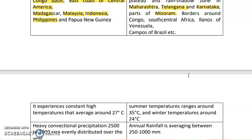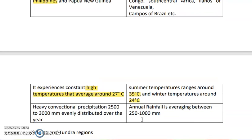The temperature in the rainforest is always high, as it is very close to the equator, with an average temperature of 27 degrees Celsius. In the savannah, the temperature is around 35 degrees Celsius in summer and 24 degrees Celsius in winter. The rainforest receives conventional rainfall of about 2500 to 3000 mm distributed throughout the year, while the savannah receives annual rainfall of 250 to 1000 mm.